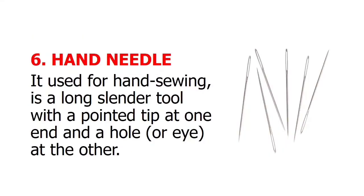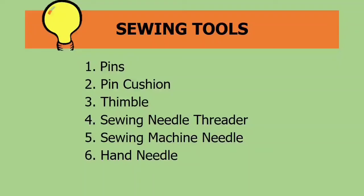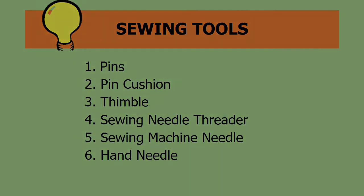And lastly, the hand needle: it is used for hand sewing. It is a long, slender tool with a pointed tip at one end and a hole or eye at the other. So once again, the different sewing tools are pins, pin cushion, thimble, sewing needle threader, sewing machine needle, and the hand needle.